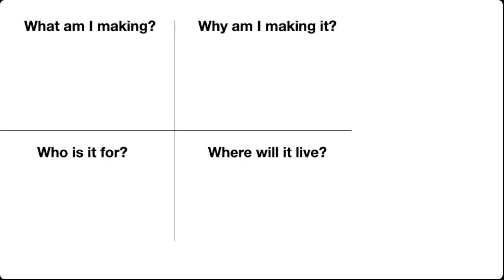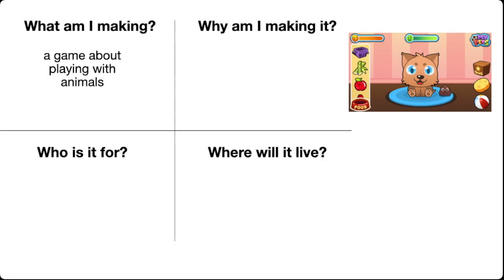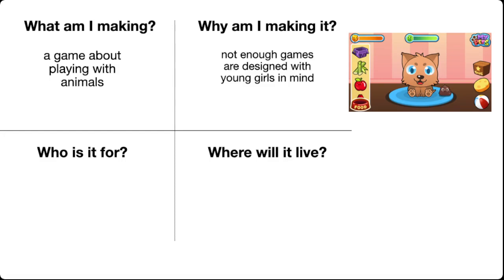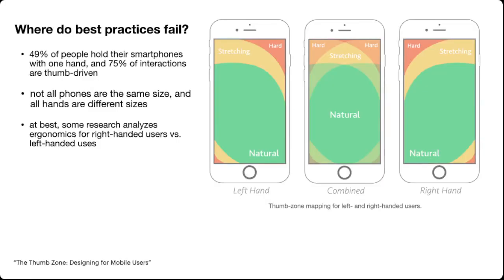As an example, say I want to make a game about playing with animals. I want to make it because I have some altruistic vision that there's not enough games designed with young girls in mind — so I'm going to design it for primary school-aged girls, and I want it to be a mobile app so that it's accessible and easy for children to have. Where do best practices fail in that example? It's easier to find reports comparing left-handed versus right-handed users than ones that account for different sizes, shapes, and muscularity of users' hands, let alone the different sizes of cell phones these days. You have to do the legwork on finding real people to help you solve these design issues.